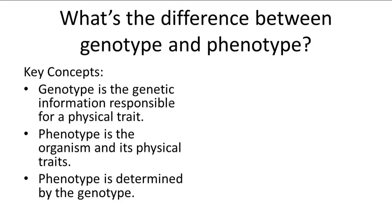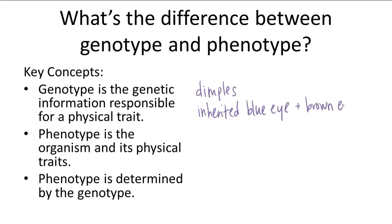Which of the following describes genotype and which describes phenotype? We're talking about Sam's dimples, or Kayla's inherited blue eye allele and brown eye allele from her mom and dad respectively. Or what if we're talking about roses — roses are red. Or that George has curly hair. Which of these are phenotypes and which are genotypes? Let's go through each of them together.